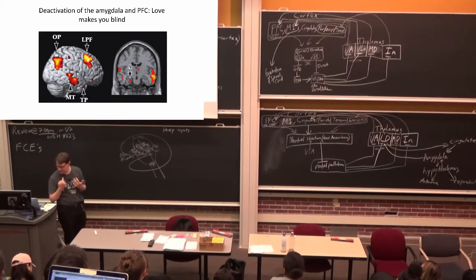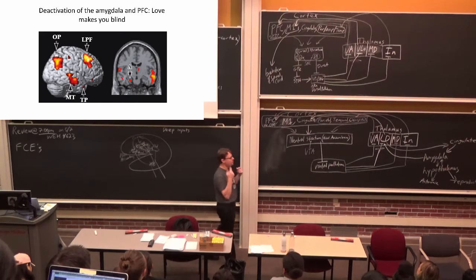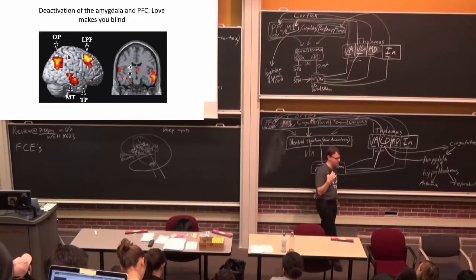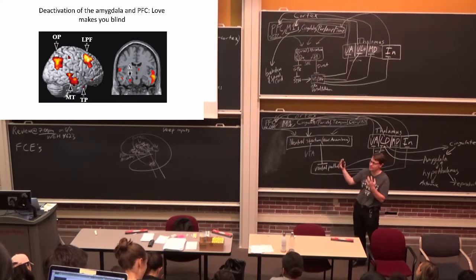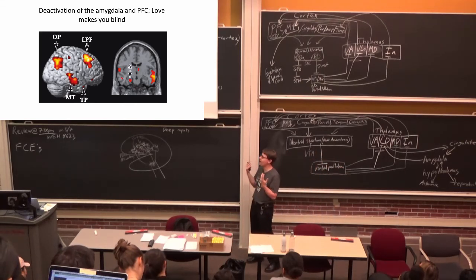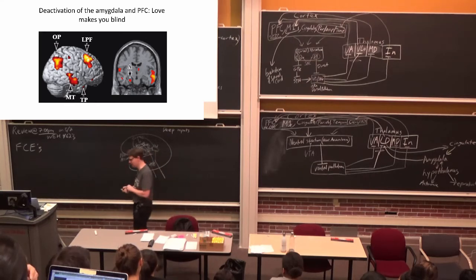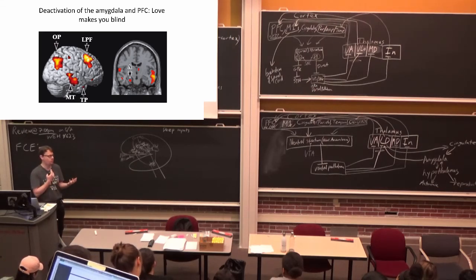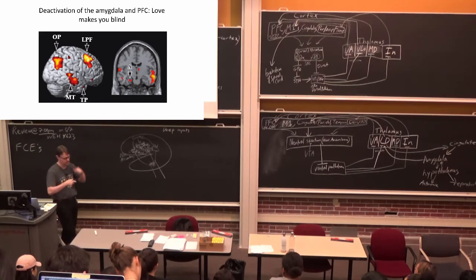Another study recruited people who just got dumped and showed them a picture of the person who dumped them versus a friend. The brain regions active in that situation exactly match those seen in cigarette smokers craving a smoke or drug addicts craving a hit of their drug — withdrawal symptoms. One other finding is that the amygdala and some parts of the prefrontal cortex actually become underactive when you see the person you've fallen in love with, which may explain why people in love don't notice what others might consider obvious red flags.